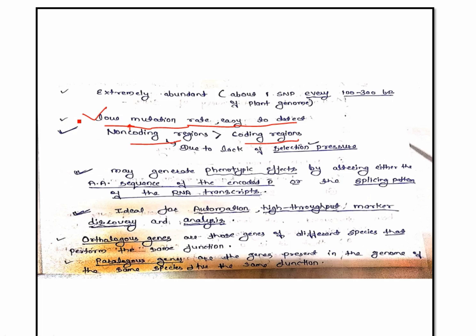Although SNPs are mainly present in non-coding regions, they can generate phenotypic effects by altering either the amino acid sequence of the encoded protein or the splicing pattern of the RNA transcript. Many examples exist where one nucleotide replaced by another causes phenotypic change. SSR markers are only suitable for medium to high throughput genotyping, whereas SNP markers are ideal for automation, high-throughput and ultra-high-throughput marker discovery and analysis — making this their most important advantage.